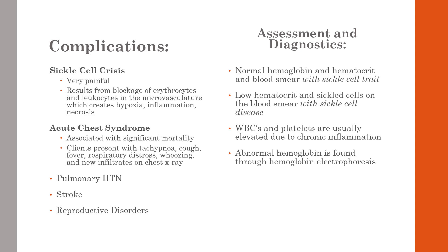Sickle cell disease can affect many organs including the spleen, lungs, kidneys, heart, liver, eyes, and central nervous system. For complications, the most common is an acute vaso-occlusive crisis — a very painful condition caused by accumulation of erythrocytes and leukocytes in the microcirculation, restricting blood flow to tissues and causing hypoxia, inflammation, and necrosis. Nursing interventions focus on managing pain, managing fatigue, preventing and managing infection, promoting coping, and education to prevent or diminish symptoms.